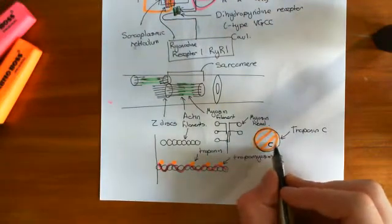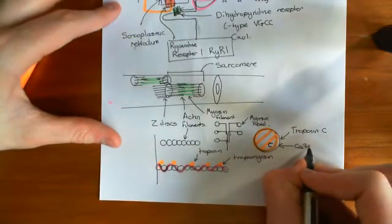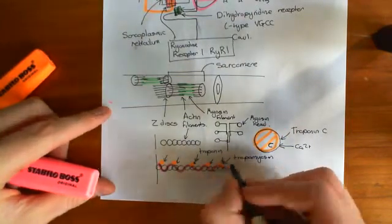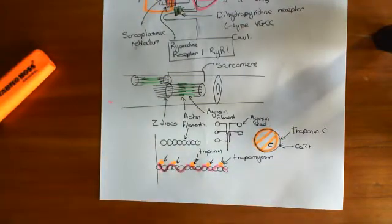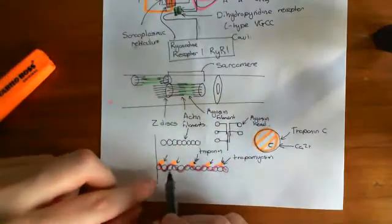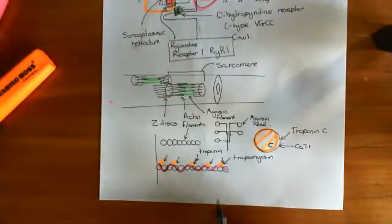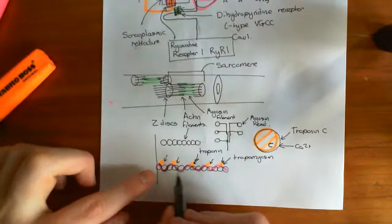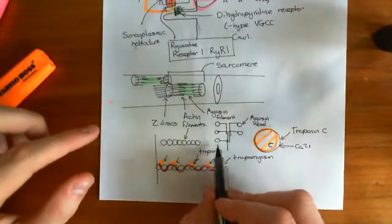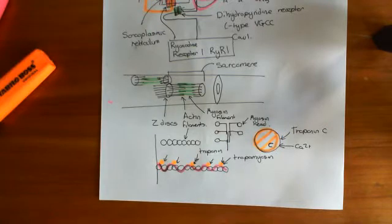Troponin C is the one that senses calcium — that's why it's called troponin C. What's going to happen is that calcium will come and bind to troponin C, binding to every single one of these troponin molecules. Calcium has gone up hugely because we've opened the ryanodine 1 receptors. Calcium binding to troponin C will cause it to change its conformation, which will then trigger tropomyosin to change its conformation. When tropomyosin changes conformation, it will expose the myosin binding sites on the actin molecules, and then the myosin heads will be able to interact with those binding sites and you'll be able to get a contraction.